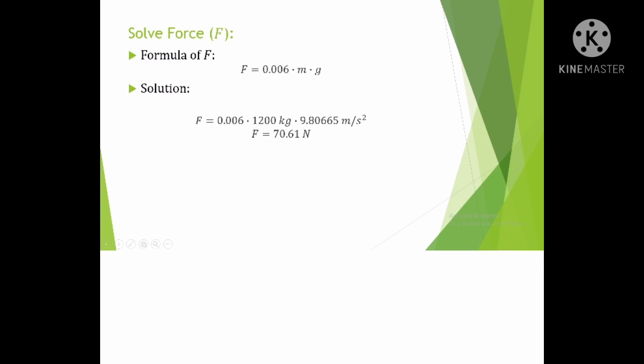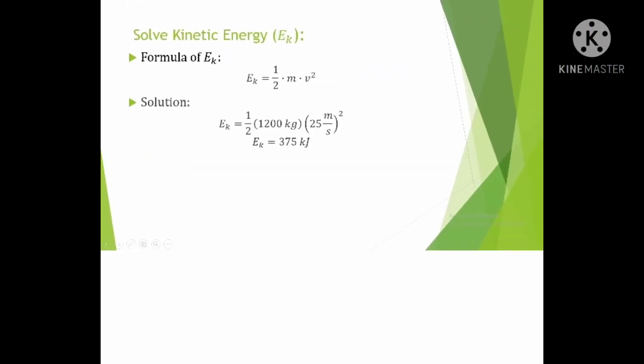The first thing you need to do is to solve for force. The formula of force is F equals 0.006 times m times g. Then the solution is F equals 0.006 times 1200 kilograms times the gravity 9.80665 meters per second squared. The force is 70.61 newtons.